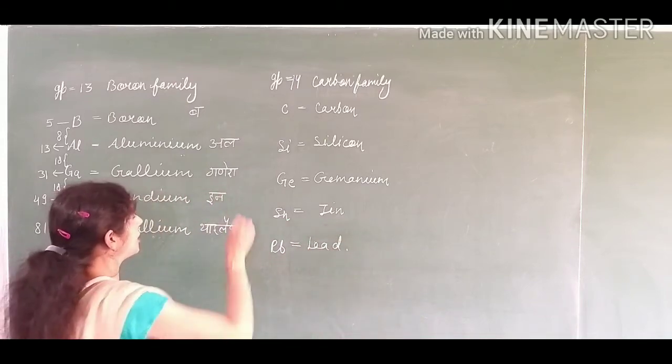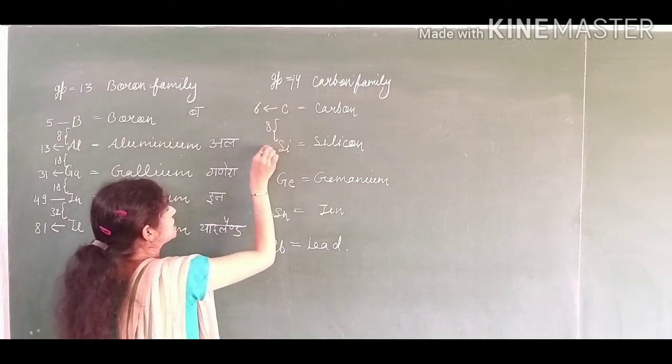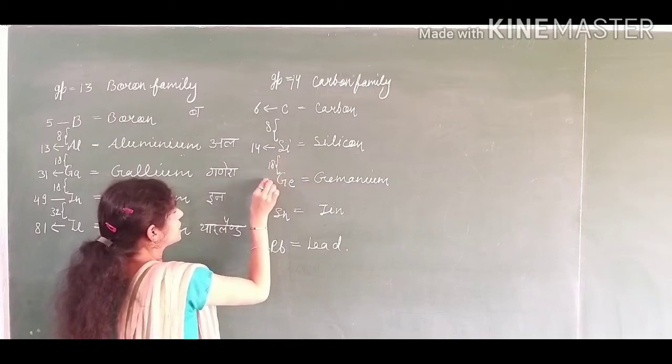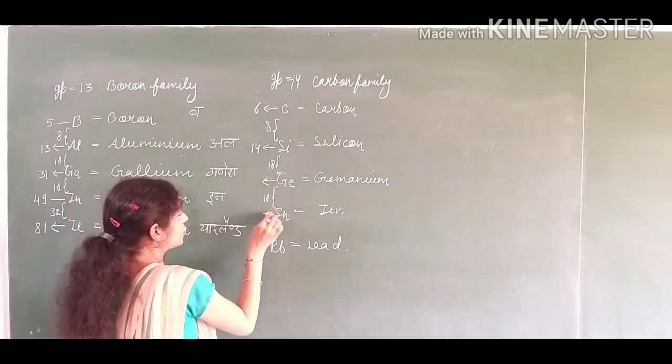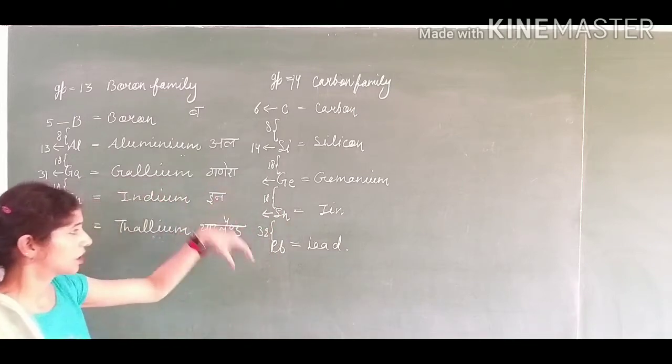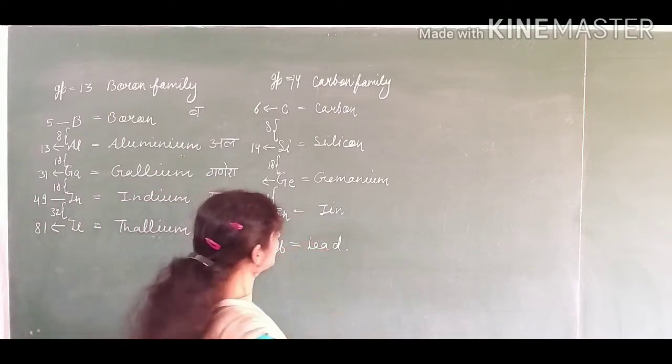How to find out their atomic numbers? Carbon atomic number is 6. 8 is to be added, it becomes 14. Now 18 is to be added. Again 18 is to be added to find the atomic number of germanium, and at last 32 is to be added to find the atomic number of lead.